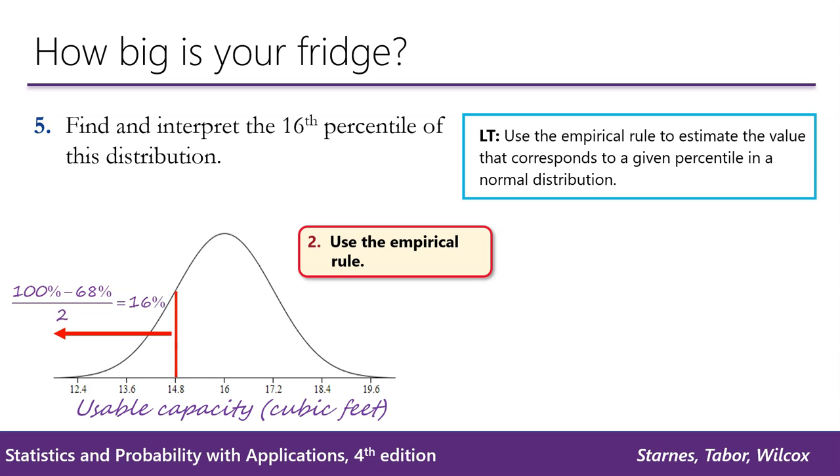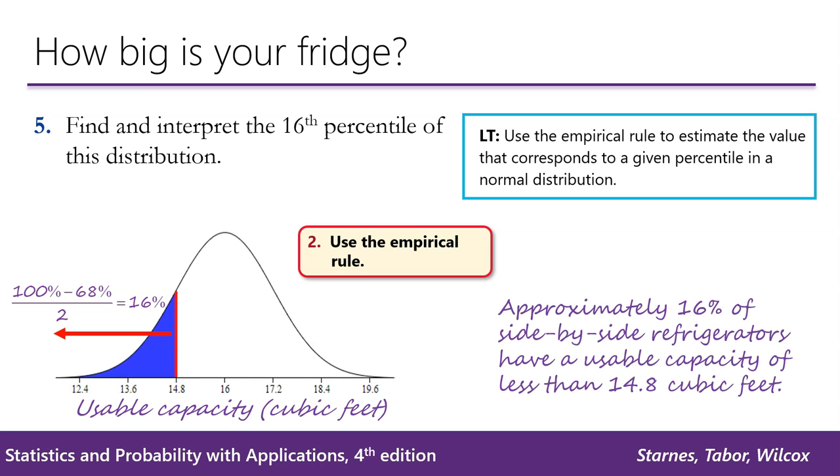Now when we're asked for a percentile, we just strictly want area to the left of 14.8. So we shade this region and we can state that approximately 16% of side-by-side refrigerators have a usable capacity that is less than 14.8 cubic feet.